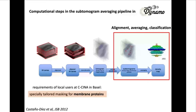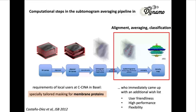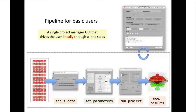Once we had our first working version, users — at that moment my colleagues in Basel — wanted it to be more user-friendly, with higher performance and more flexibility for newer challenges and samples. So we started developing Dynamo until we had several flavors of it. At the center is a typical pipeline for basic users: essentially a single GUI that drives the user linearly through all the steps, so the user can click through, input the data, and set the parameters for the alignment run.